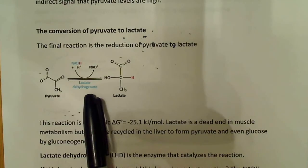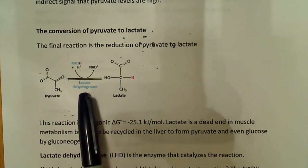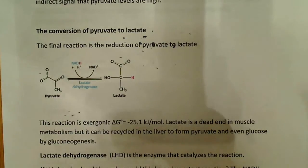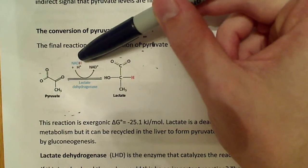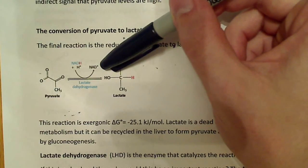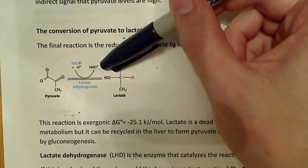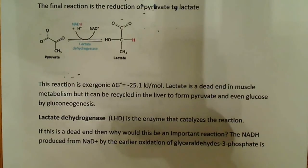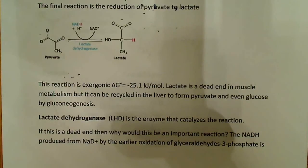The enzyme is called lactate dehydrogenase. Notice an interesting fact: NADH plus H+ is consumed and NAD+ is made. The reaction is exergonic — it gives off energy — with a large negative delta G. The delta G is negative 25.1 kilojoules per mole, which is about negative 6 kcal per mole.